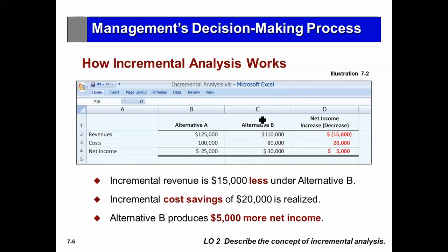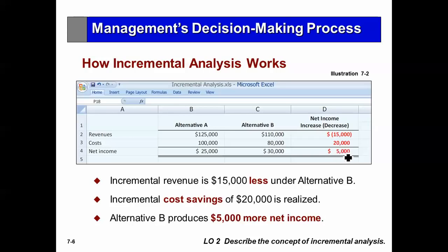For an example, we have Alternative A with revenues of $125,000 and Alternative B with revenues of $110,000. What we focus on is what is different between these alternatives — that's what's called incremental analysis. So there's a difference of $15,000. Then you look at the costs: $100,000 for one alternative, $80,000 here. And so you see there's a difference in net income of $5,000.